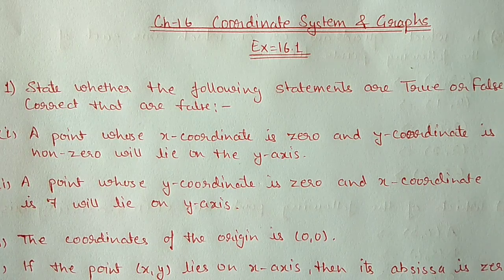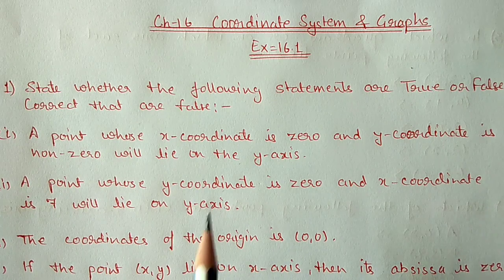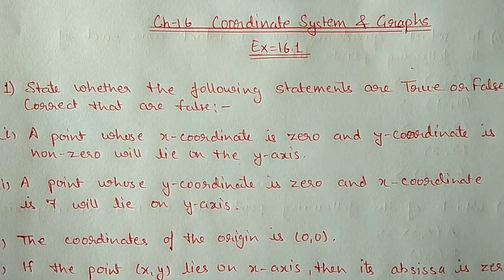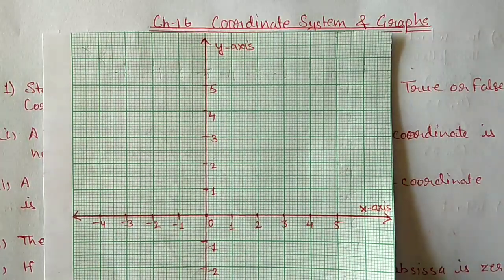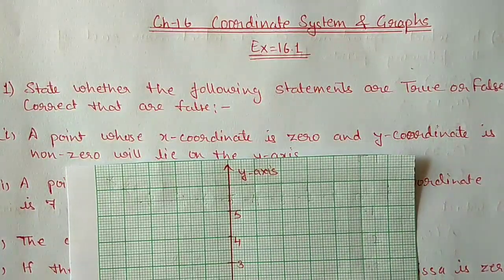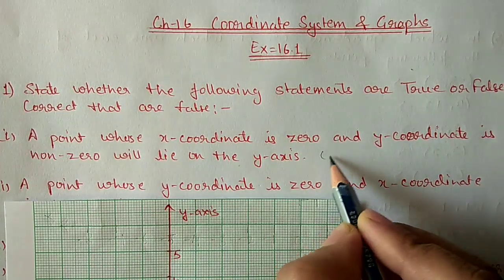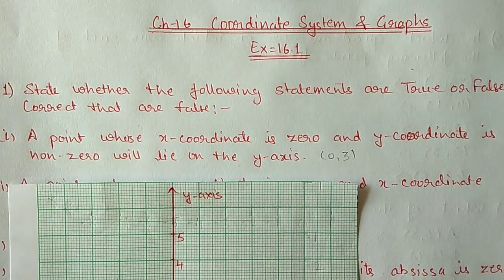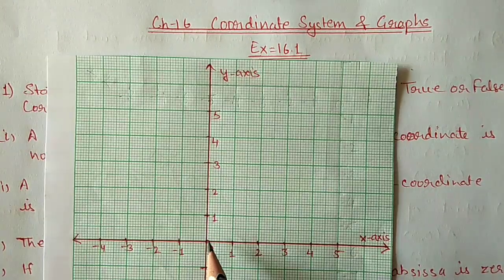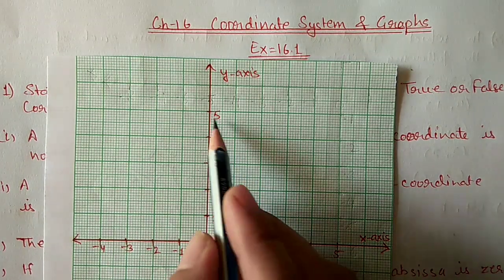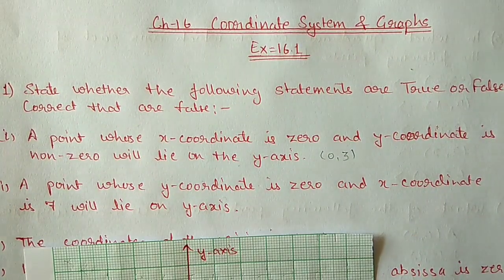Question number 1: State whether the following statements are true or false, and correct the false statement. Part a: a point whose x-coordinate is 0 and y-coordinate is non-zero will lie on the y-axis. X-coordinate is 0, y-coordinate is non-zero — say y is 3. We look at 0 on x-axis and 3 on y-axis; the point lies on the y-axis. So this statement is true.